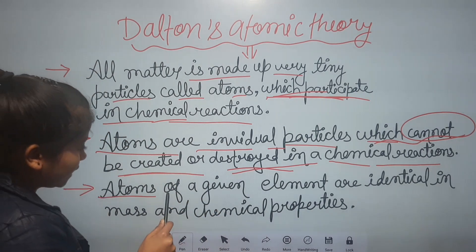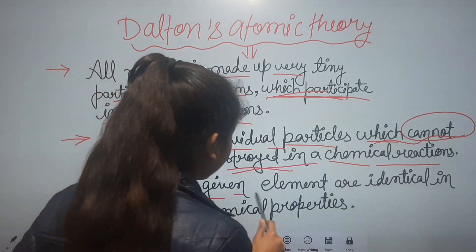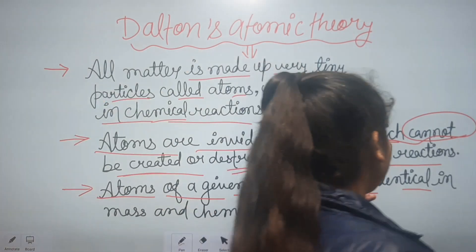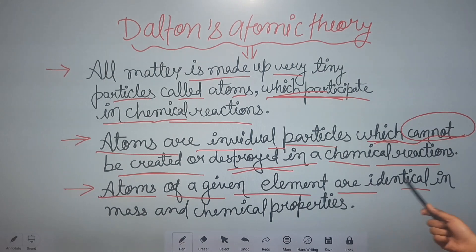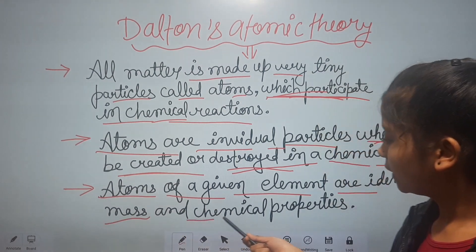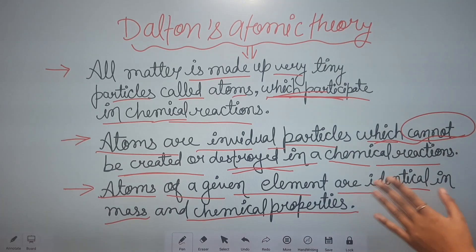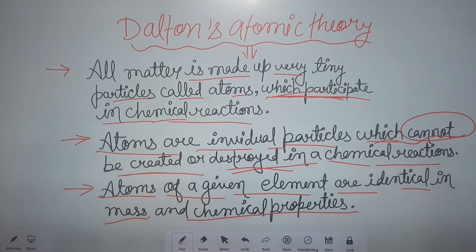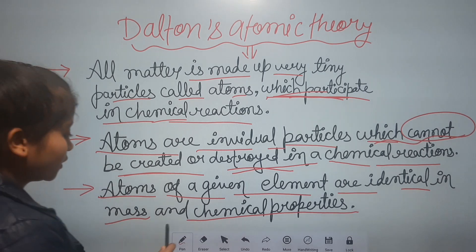The next point is: atoms of a given element are identical in mass and chemical properties. It means the atoms of a given element have identical mass and also identical chemical properties.